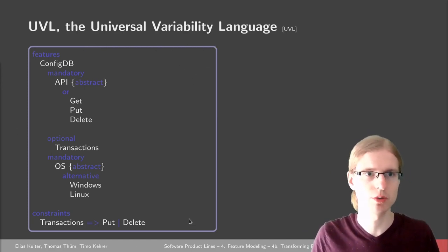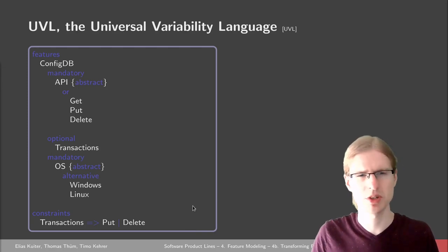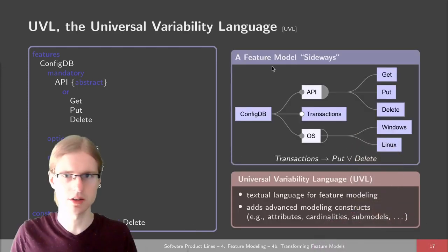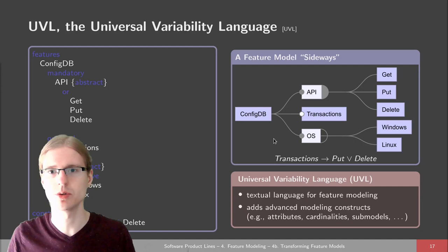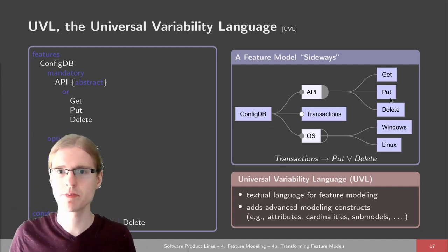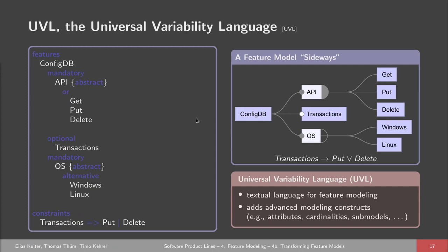UVL is a textual language for modeling features and their dependencies. It's pretty easy to understand: take a normal feature diagram, rotate it so the root is on the left and the leaves are on the right, then put the features into a tabulated text format. Above, we have the feature tree, and below we have the cross-tree constraints — just as in a normal feature diagram. We list the root feature and its mandatory children, such as API, which is an OR group containing get, put, and delete.